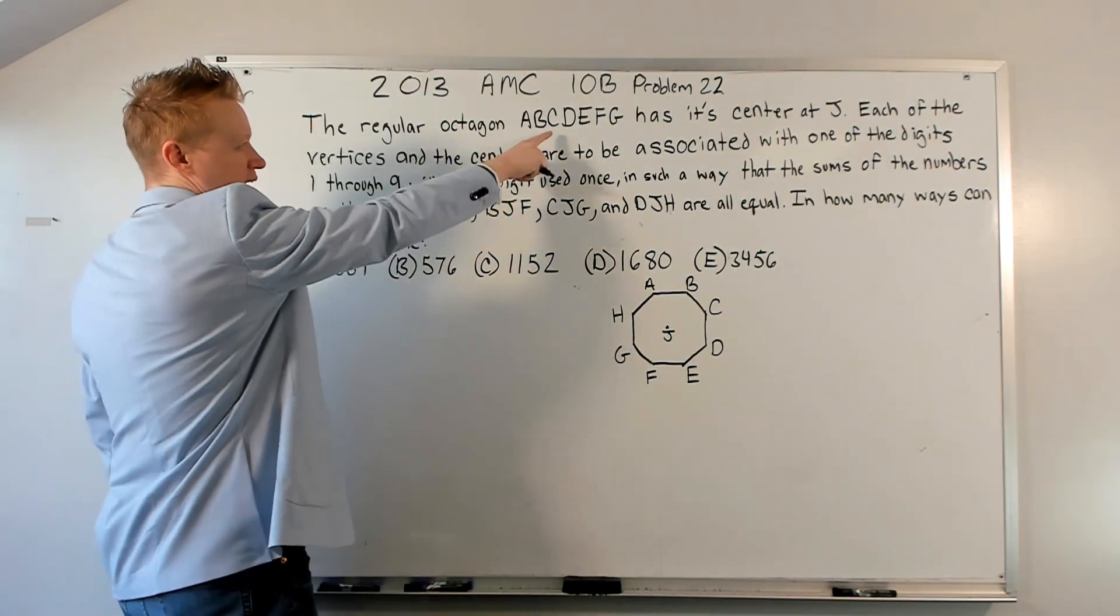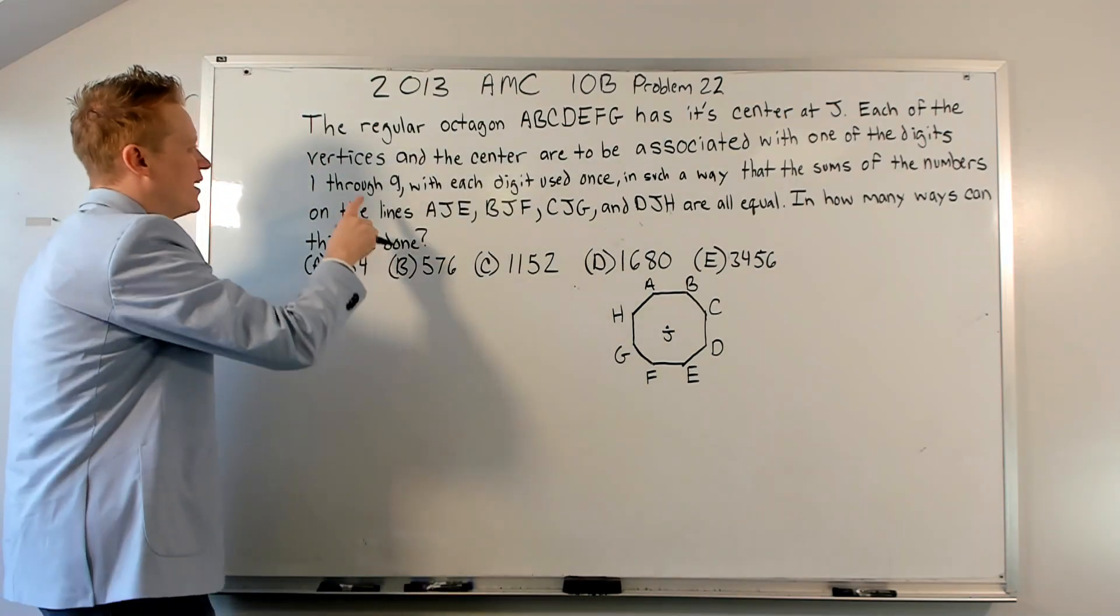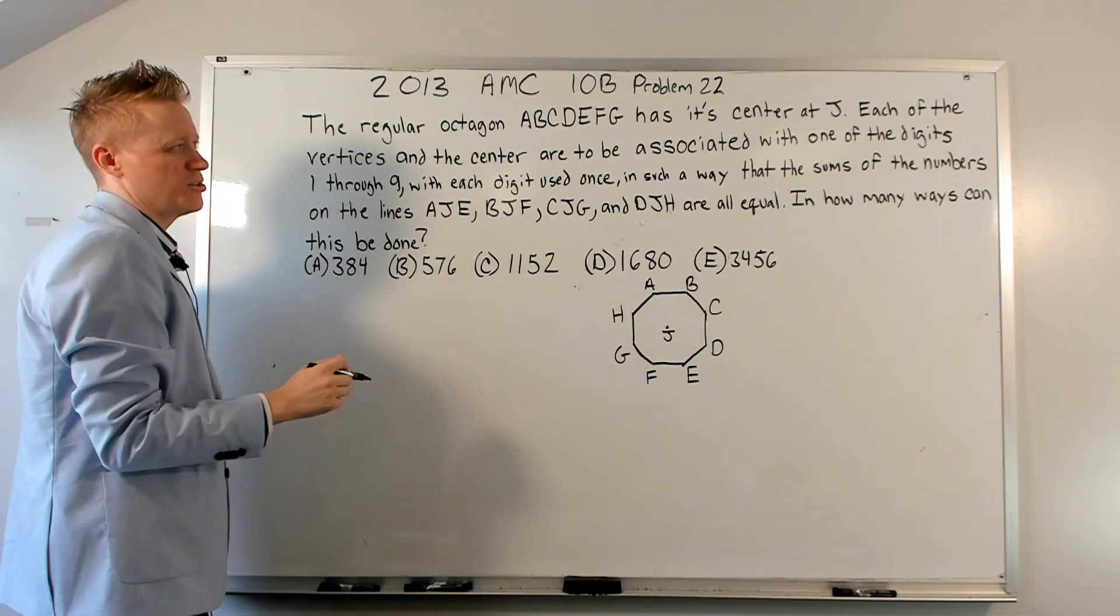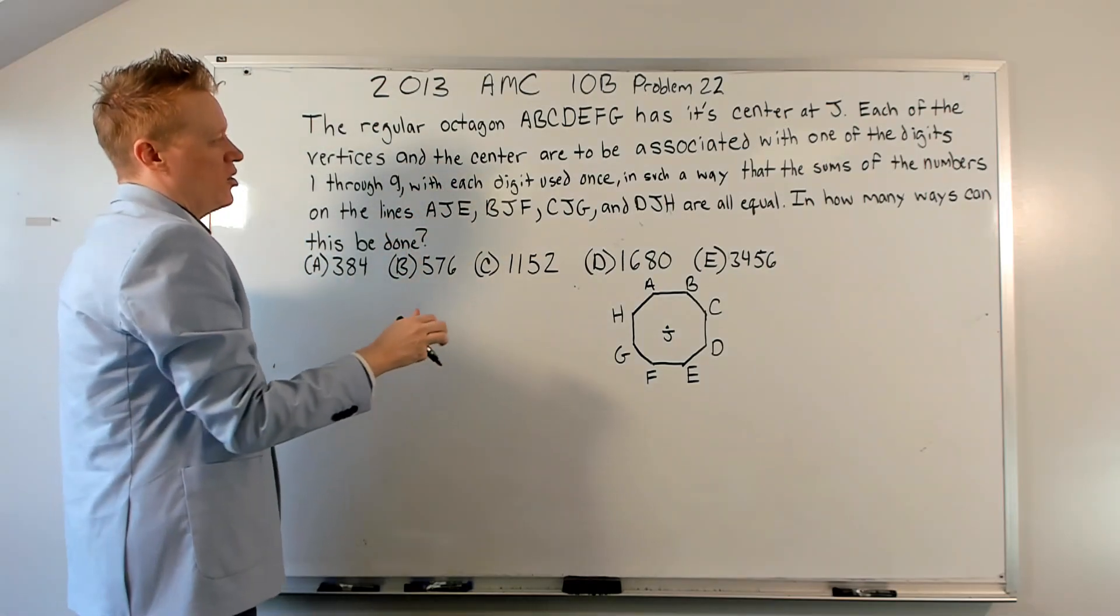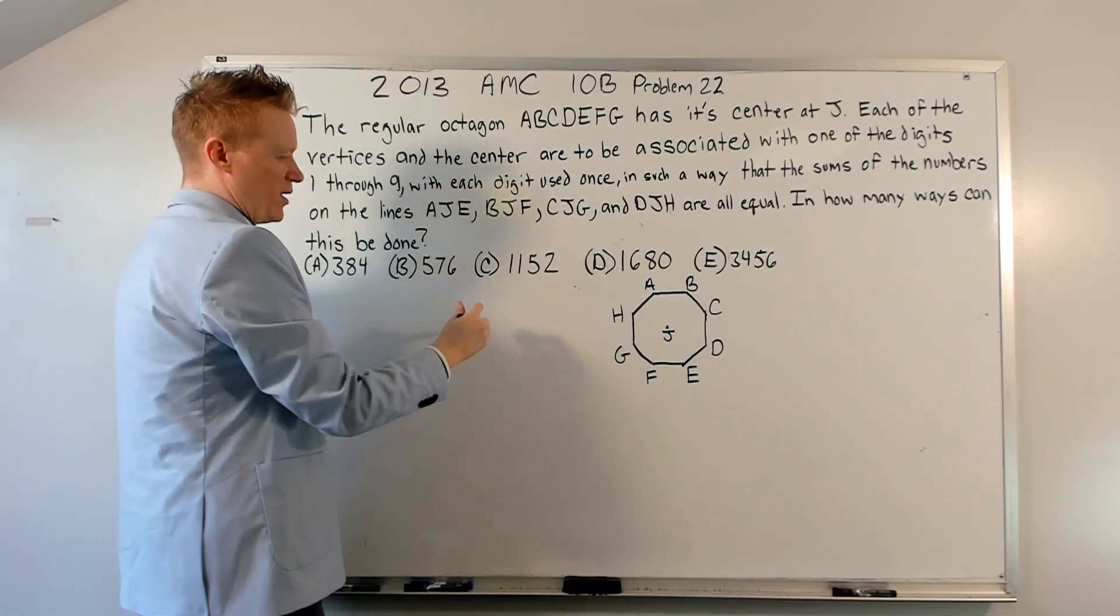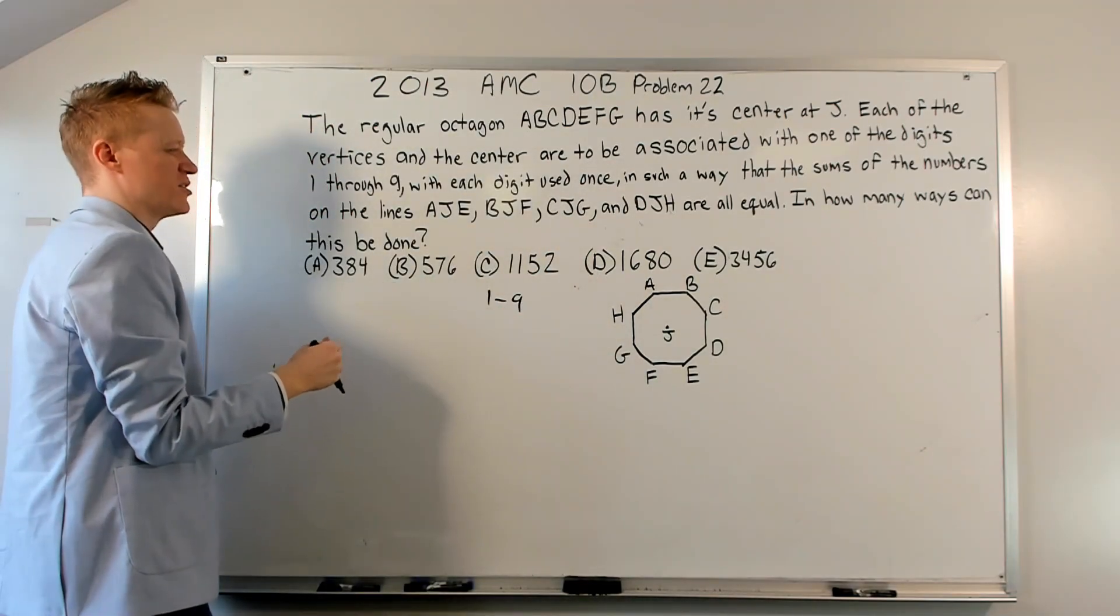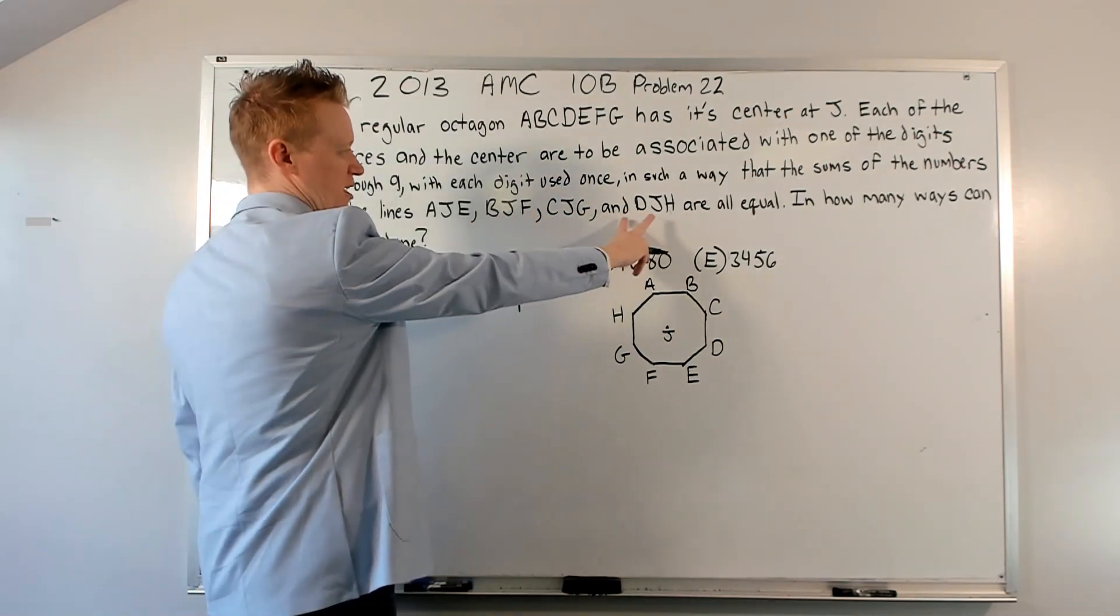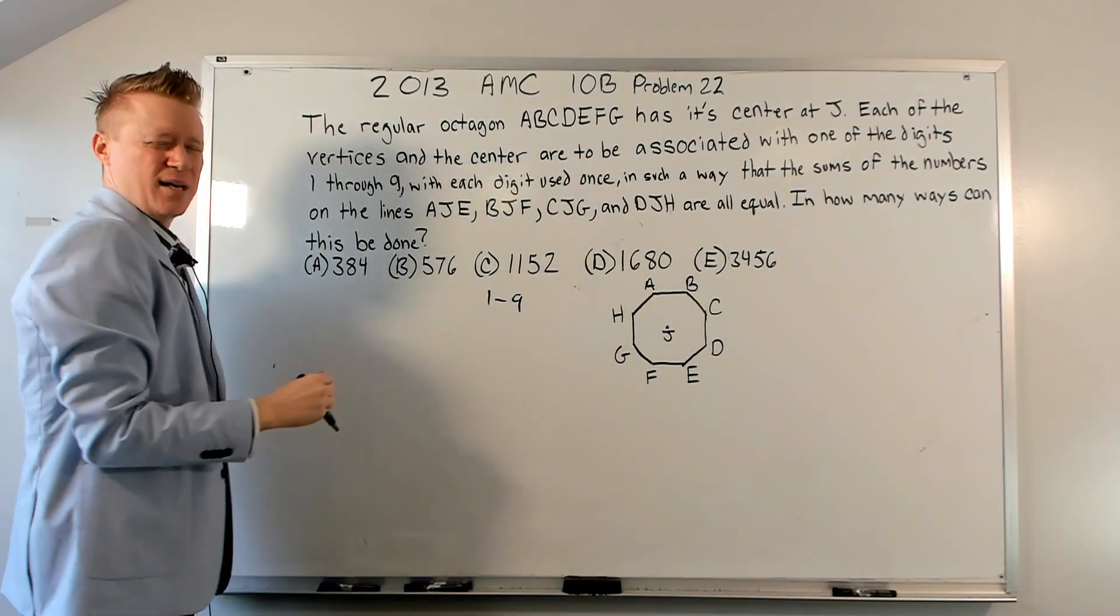Okay. Regular octagon ABCDEFGH has its center at J. Each of the vertices and the center are to be associated with one of the digits 1 through 9 with each digit used once in such a way that the sums of the numbers on the lines AJE, BJF, CJG, and DJH are all equal. In how many ways can this be done?